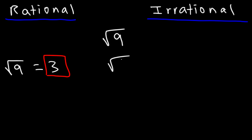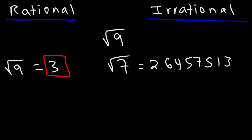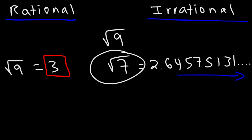But what about the square root of 7? Is it rational or irrational? We can't simplify the square root of 7 to a whole number. If you use a calculator, you'll find that the square root of 7 is 2.64575131 and this can go on for a long time. Whenever you see a decimal number that is non-repeating and goes on forever, and you can't write it as a fraction of two integers, that's when you have an irrational number. So one way to identify them is if you have a square root that can't be simplified to an integer — typically that's an irrational number.